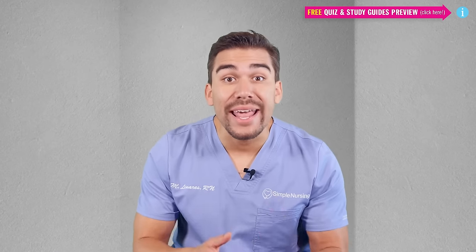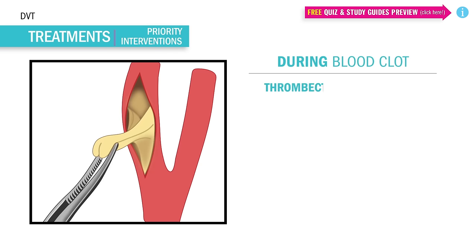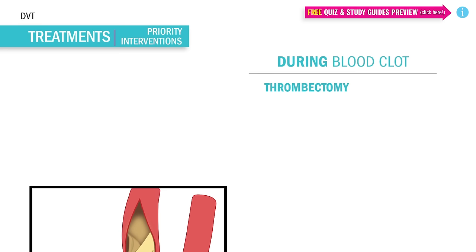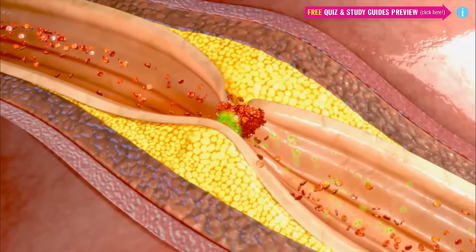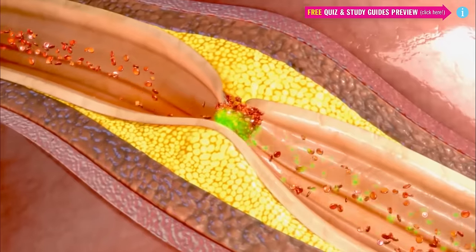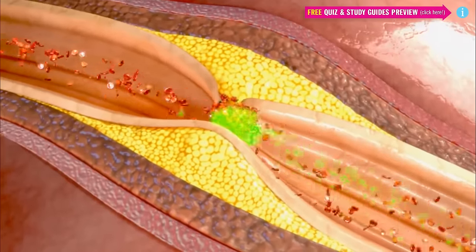Alright guys, now for drug treatments during and after blood clots. During DVTs, we treat the big clots with surgery like a thrombectomy — a surgical removal of the big clots. Fibrinolytics, also known as clot busters, are not routine for DVTs but are still used.